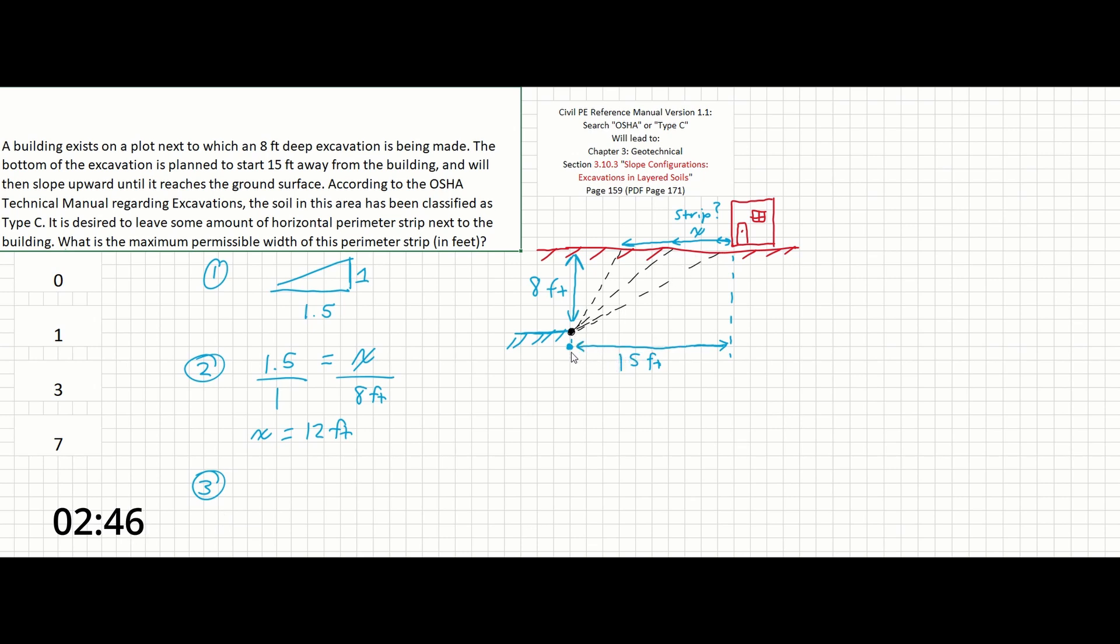We now know that there's going to be 12 feet of horizontal length required for a slope of Type C soil, meaning that if we have 15 feet and we need 12 feet, then 3 feet of horizontal distance will be left over for a perimeter strip.